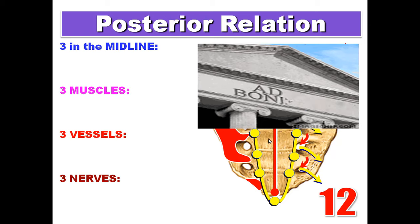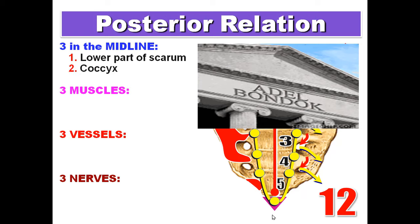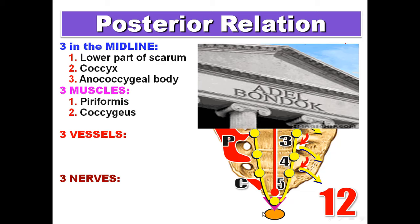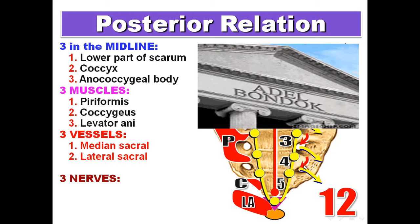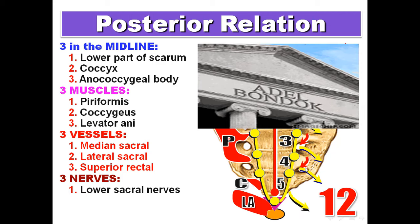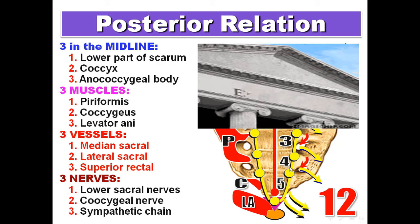The rectum begins at the third piece of the sacrum, so the posterior relations of the rectum consist of 12 structures — four groups of three. In the midline: the lower three pieces of the sacrum, coccyx, and anococcygeal body. Three muscles: piriformis, coccygeus, and levator ani. Three arteries: median sacral artery, lateral sacral arteries, and superior rectal artery. Three nerves: sympathetic chains, lower sacral nerves, and coccygeal nerve.